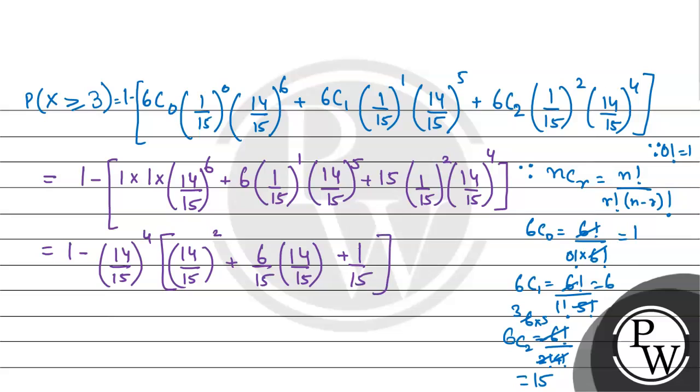Now we just solve this and we should get a value, which is 1 minus 14 by 15 to the power 4, taking out the common factor of 14 upon 15 to the power 4, multiplied by certain terms.